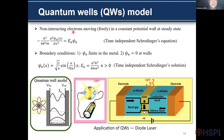This is the Schrödinger equation. Based on the boundary conditions, we can derive the wave function and the energy.